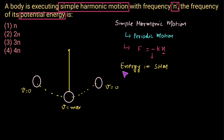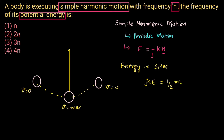If we discuss the energy in SHM, because there is a velocity in this system, due to the virtue of its velocity there would be certain kinetic energy, because the formula of kinetic energy is half mv squared. Because there is a velocity, kinetic energy is stored in this system.